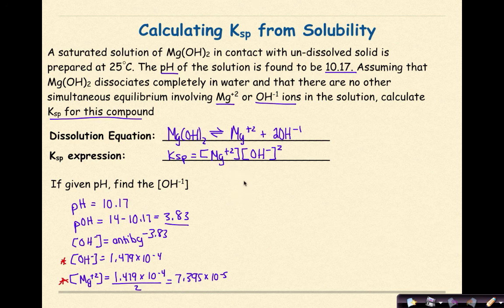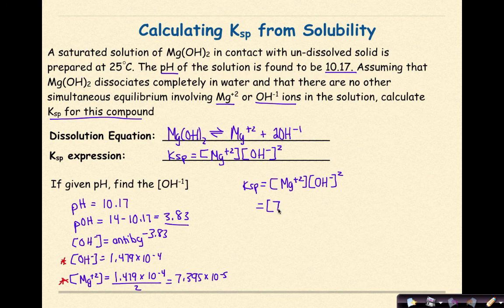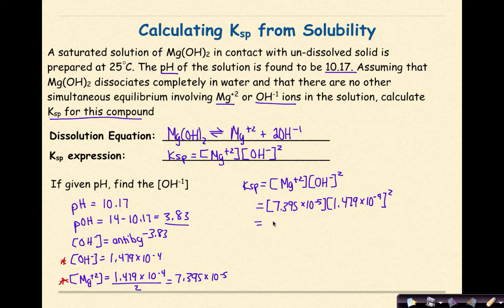Now we have both the hydroxide ion concentration and the magnesium ion concentration. Plugging into the KSP expression: KSP equals (7.395 × 10⁻⁵) times (1.479 × 10⁻⁴) squared. Working through this gives KSP equals 1.6 times 10 to the negative 12. This indicates that magnesium hydroxide does not dissolve much at a pH of 10.17.